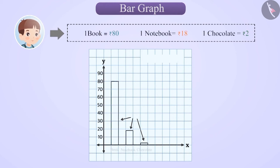The length of the bar represents the given number. Like here, we can say that the first bar denotes the value of the book as Rs. 80. The second bar denotes the value of the notebook as Rs. 18, while the third bar denotes the value of the chocolate as Rs. 2.